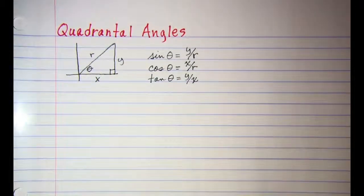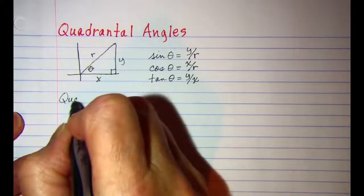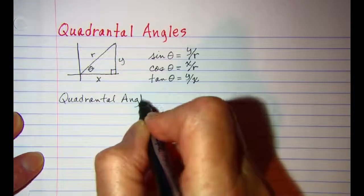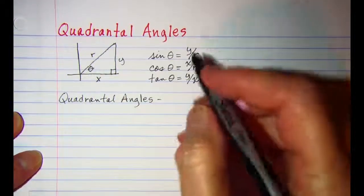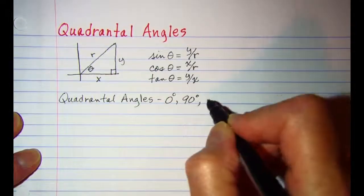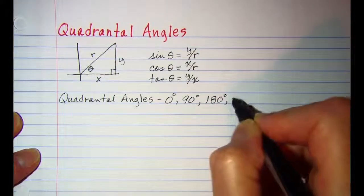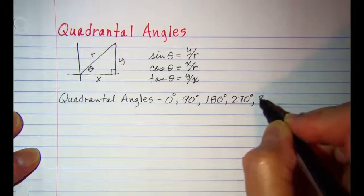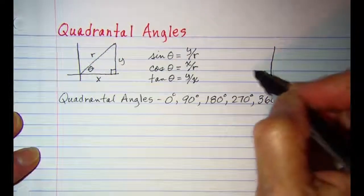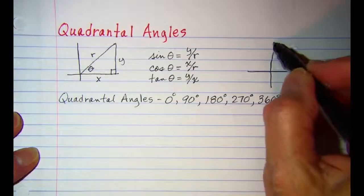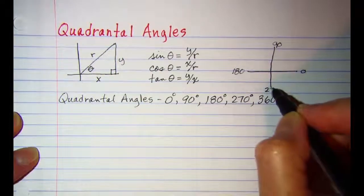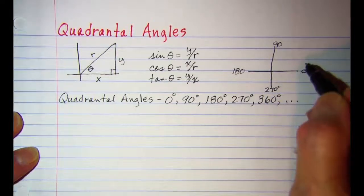Now our Quadrantal Angles are the angles that lie on the axes: 0 degrees, 90 degrees, 180 degrees, 270 degrees, 360 degrees, and so on. Those basically are the angles that lie on the axes.